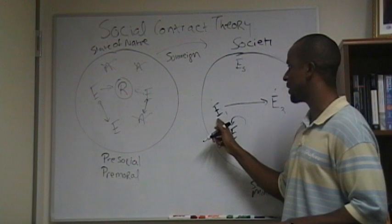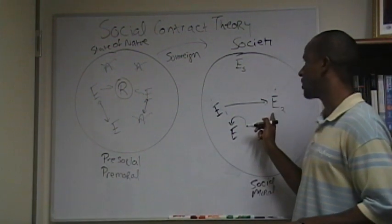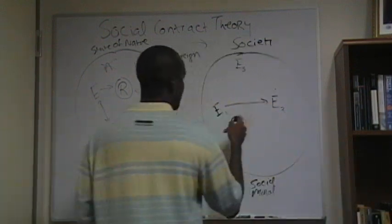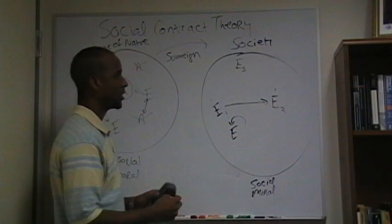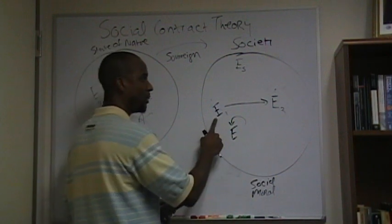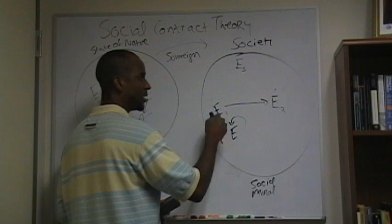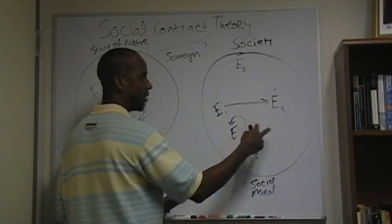So what happens in the state of nature is that you make an agreement. Someone forfeits. Egoist 2 forfeits on the agreement. And what would end up happening? Well, the question is we need to draw another arrow. And where would that arrow go? I have fulfilled my obligation and gave you something. You are supposed to fulfill your obligation and give me something. So it would be a bi-directional arrow. It's not.